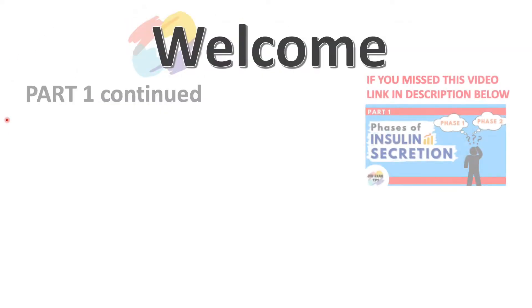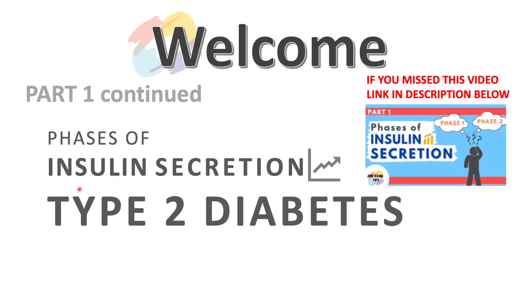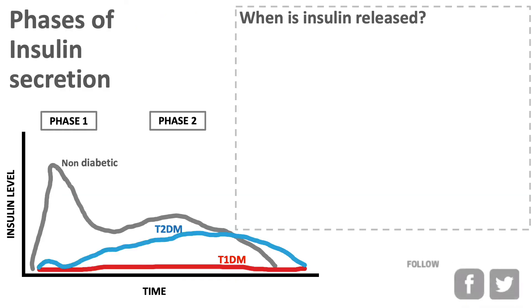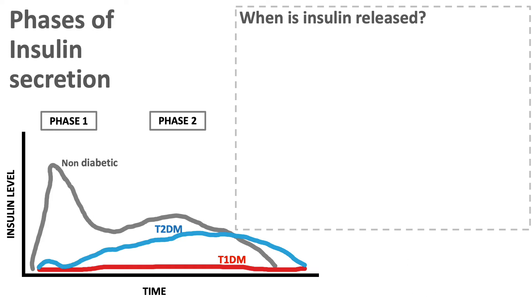Hello and welcome to the presentation. This is a continuation of part 1 on phases of insulin secretion. In this lecture we will be focusing on type 2 diabetes. Before we dive into the main part of the presentation, I briefly want to go through the phases of insulin secretion and summarize the key components.